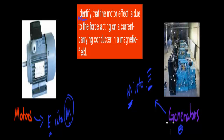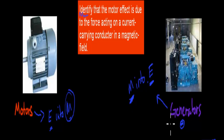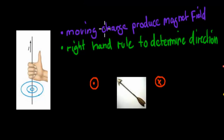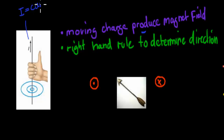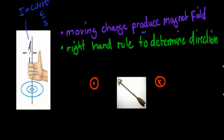Before we start, let me go over a couple of concepts from year 11 that we need to know to appreciate this whole module. The first one is that moving charges produce a magnetic field — they produce their own magnetic field. Current, represented by I, is just charge over time, charge per second. So if you have current, you have a moving electric field. Moving charge produces a magnetic field, and we can determine the direction of that magnetic field using the right-hand rule.